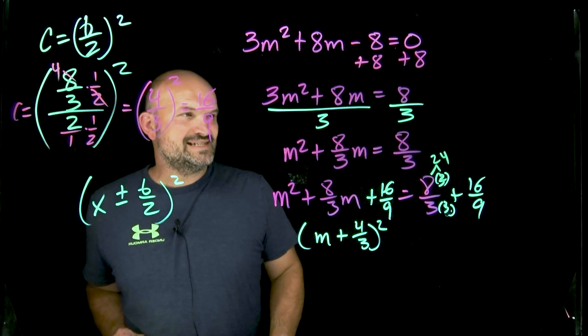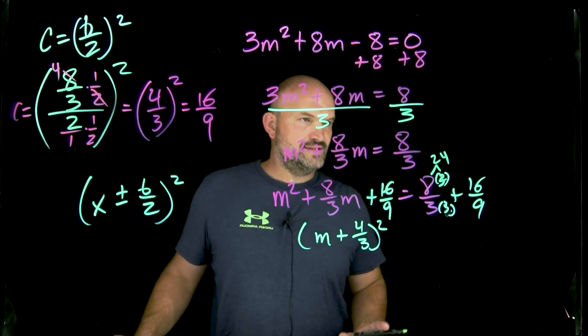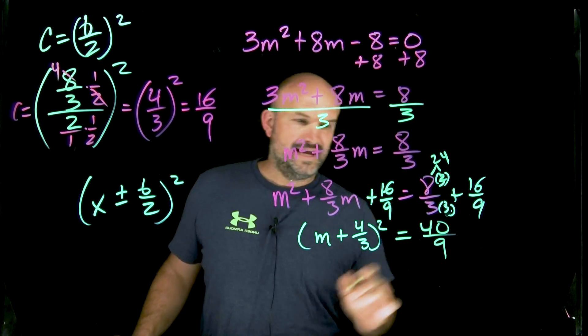So 24 plus 16, let's see, that's going to give me a 40. So that's going to equal a 40 over a 9.